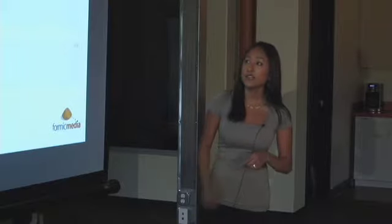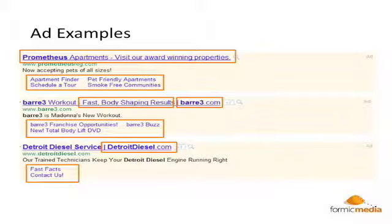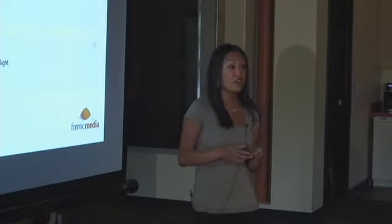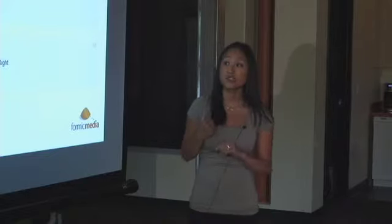Going back to the extended headline, you can see how sitelinks combined with the extended headline make everything more eye-catching and authoritative. On this one you can see the longer headline, the URL in the headline — you're getting probably up to the 68-character limit, where before you were limited to 25. So you've more than doubled the number of characters you can have in these headlines now, which is pretty cool.